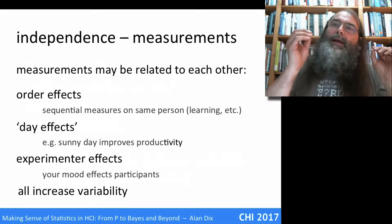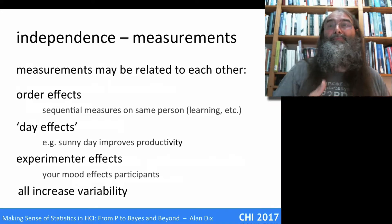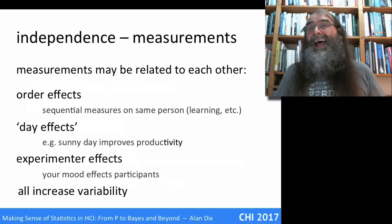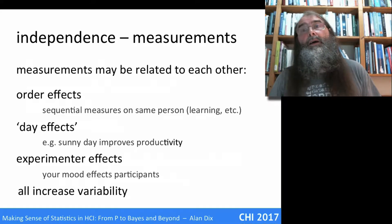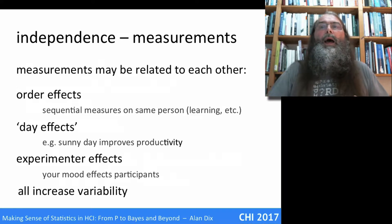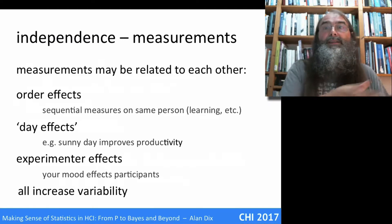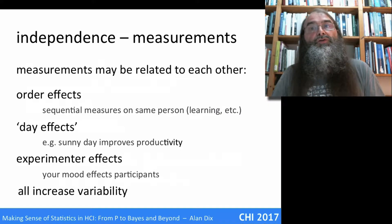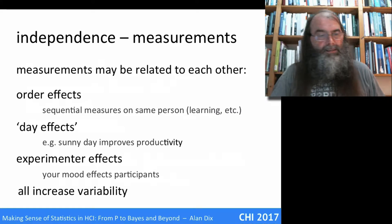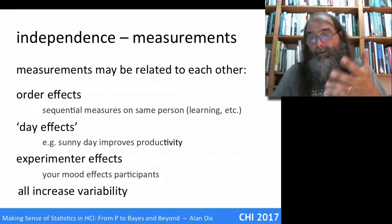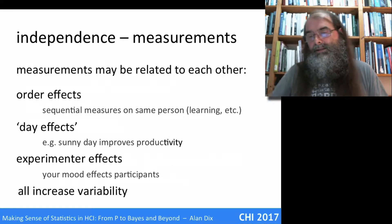All of these things tend to increase variability and can create bias. For instance, if you test one system on the first day when you're in a good mood and another system the next day when you're in a bad mood, you'll create a bias — users are more likely to have a negative view of the second system. What you should do is mitigate those effects: the first day do a mix of system one and system two, the second day do a mixture too. You'll probably increase variability, but you reduce that bias.